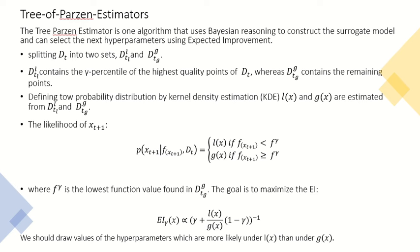L(x) over D_l and G(x) over D_g. And now we want to calculate the probability distribution for the next point in our sample, x_{t+1}. And this probability has a form like conditional probability, and it is equal to L(x) if the value of function at this point is less than F^γ, and is equal to G(x) otherwise.